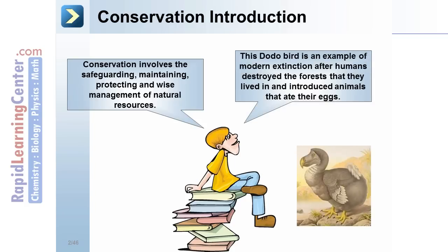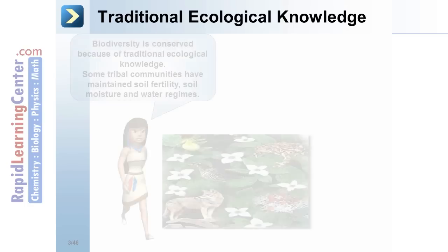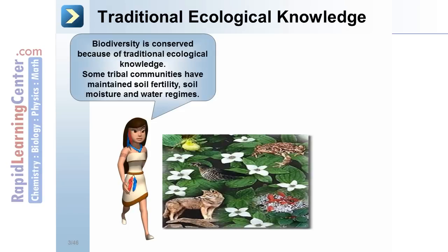The dodo bird is an example of modern extinction, after humans destroyed the forests that they lived in and introduced animals that ate their eggs. Biodiversity is conserved because of traditional ecological knowledge, and some tribal communities have maintained soil fertility.